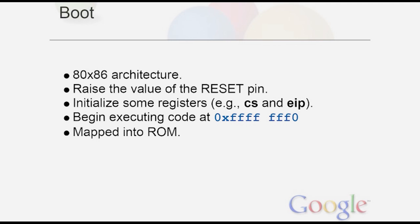There's a reset pin on the processor. When you boot a system, that pin is triggered and you reset the processor, which initializes some registers. Two important registers are the CS register and the EIP register — the instruction pointer. The CPU goes through memory, loads data, and executes it as machine instructions. That reset maps ROM code into memory and begins executing at that particular address.